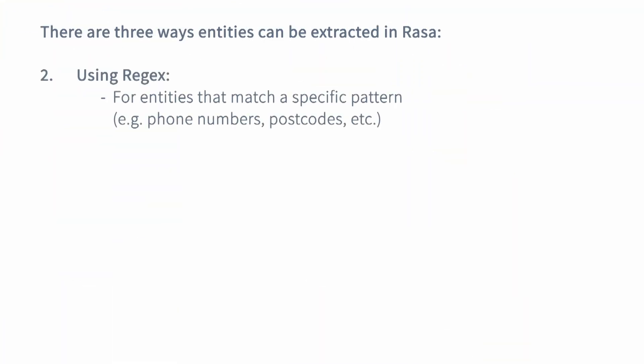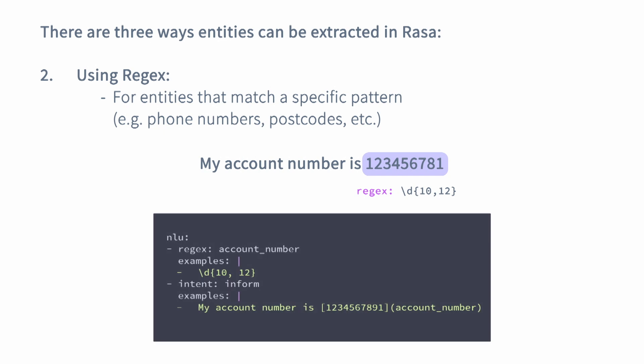Another approach for extracting entities with Rasa is using regex. Regex allows you to define a specific pattern that the entities you would like to extract should follow. This means that regex is the best approach for extracting entities that follow a specific deterministic pattern, for example user IDs and similar details. To enable your Rasa assistant to use regex, you will have to define the regex pattern and include it in your nlu.yml file in addition to a few training examples for that specific entity. Don't forget to name the entity the same way as you named your regex pattern.